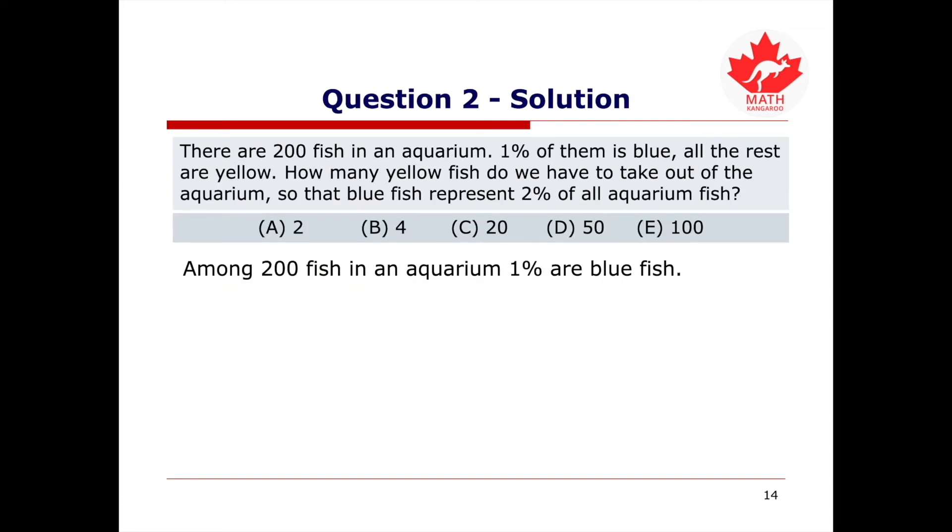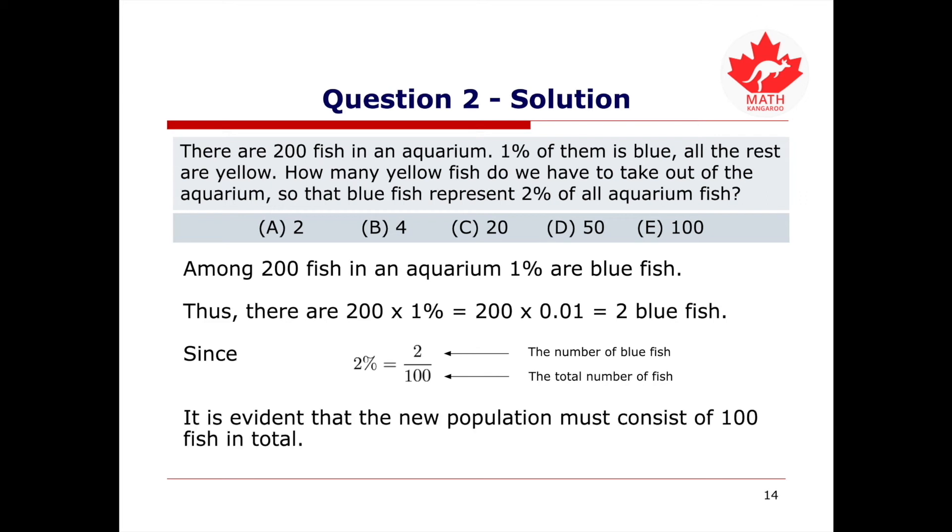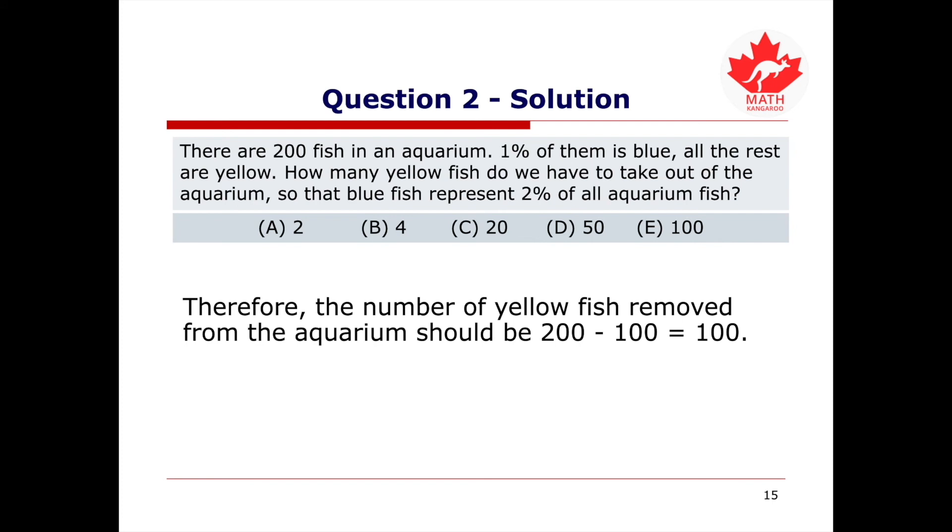Among 200 fish in an aquarium, 1% are blue fish. Thus, there are 200 times 1%, which is equal to 200 times 0.01, which is equivalent to 2 blue fish in the aquarium. In order for 2 blue fish to constitute 2% of the population of fish in the aquarium, the new population must consist of 100 fish in total, since 2% equals 2 over 100. We can see that the numerator 2 corresponds to 2 blue fish, and the denominator 100 must then represent the total number of fish in the aquarium. Thus, it is evident that the new population of fish must consist of 100 fish in total. Therefore, the number of yellow fish removed from the aquarium should be 200 minus 100 and is equal to 100 yellow fish. This means the correct answer is E.